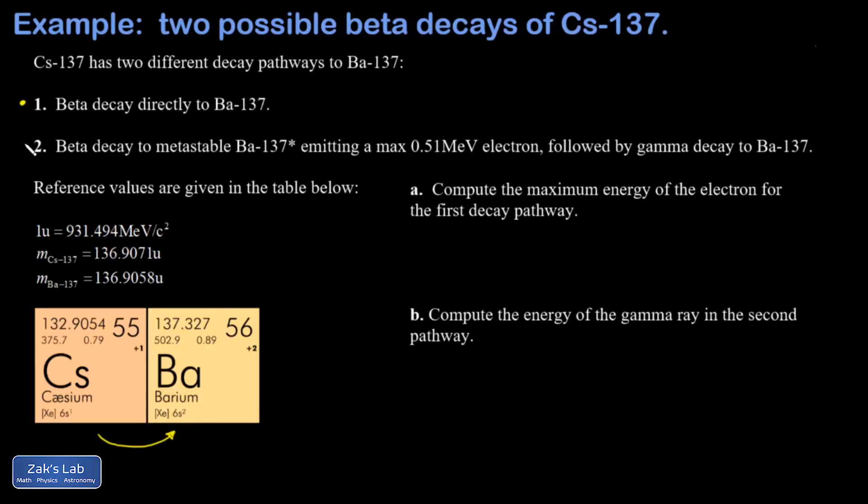We're then told there's a second pathway for cesium-137 to decay into barium-137. What happens here is a lower energy beta decay—we're told it's 0.51 MeV for the electron—that leaves the nucleus in an excited state. That means we're looking at barium-137 star, called metastable barium-137. This is just a higher energy state in